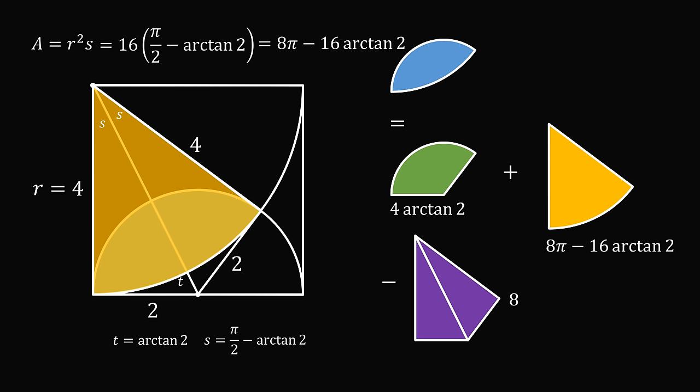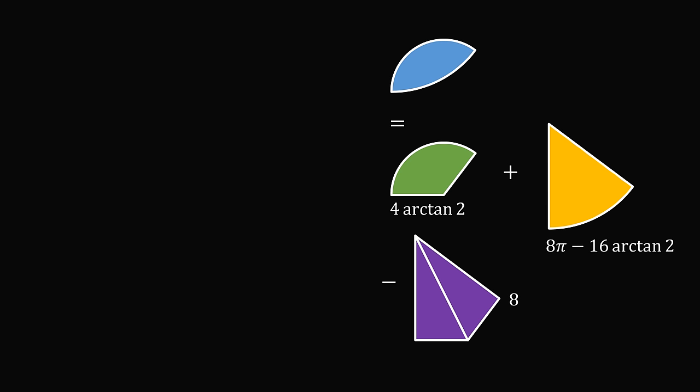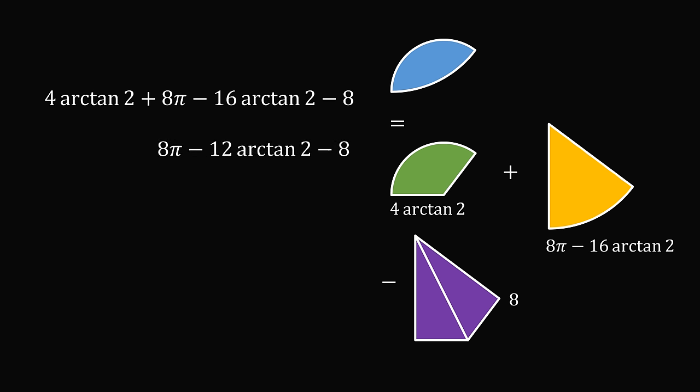All that remains is to put this all into one formula. The area we want is 4 arctangent of 2, plus 8 pi minus 16 arctangent of 2, minus 8. Combining the arctangent terms: 4 arctangent of 2 minus 16 arctangent of 2 gives minus 12 arctangent of 2. So the final formula is 8 pi minus 12 times arctangent of 2 minus 8, which is approximately equal to 3.847. And that's the answer.